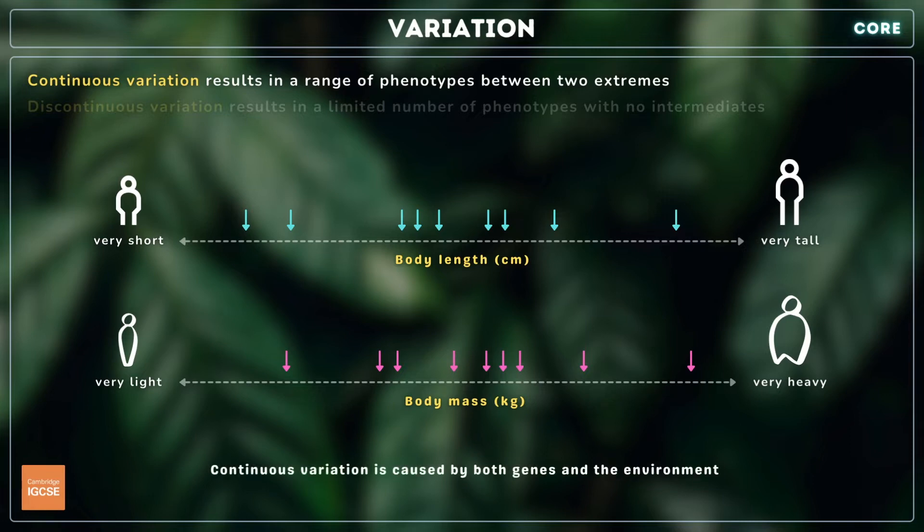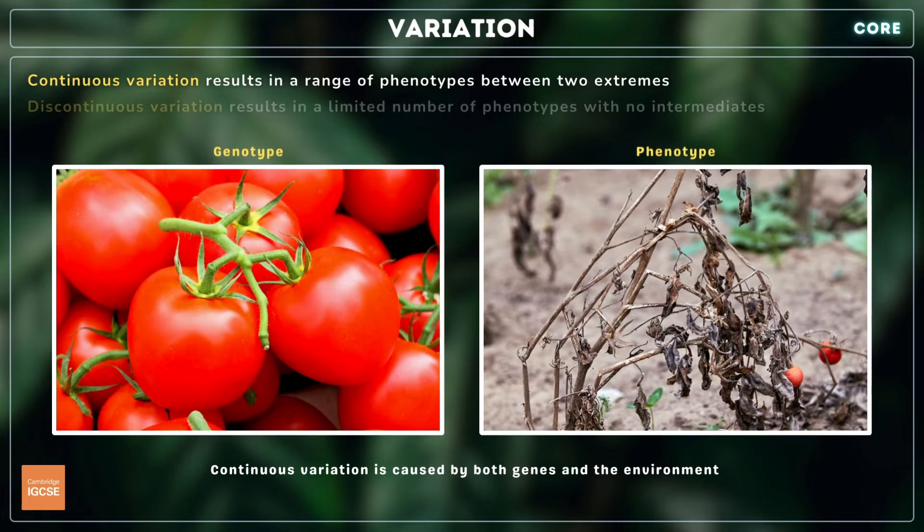Continuous variation is always influenced by both genes and the environment. For example, a tomato plant may possess the genotype for large tomatoes, but may lack the water, minerals, or sunlight needed to produce them.